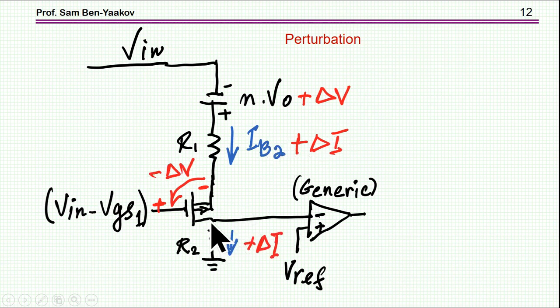Now IB2, of course, is equal to the current here. So this current is becoming larger. So therefore, there is a voltage increase here at this terminal, at this negative input of the amplifier,